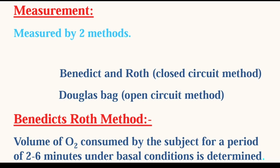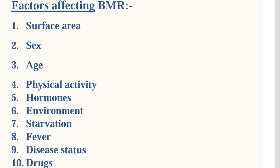BMR is calculated by two methods: the Benedict and Roth method and the Douglas-Haldane bag method. The most commonly used is the Benedict and Roth method, where the volume of oxygen consumed by the subject for two to six minutes under basal conditions is determined. BMR is affected by various factors including body surface area, sex, age, physical activity, environmental conditions, hormones, starvation, fever, disease status, and drugs. These factors ultimately affect the total calories required per day.